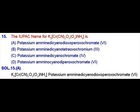Question number 15: first we speak the name of the cation, potassium, then the ligands in the square brackets in alphabetical order — amine, then dicyano (using the C alphabet), then dioxo, then peroxo. Finally, the central metal ion: since it is an anion, it will be chromate(6).